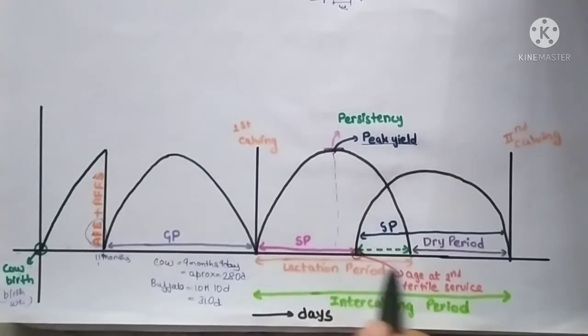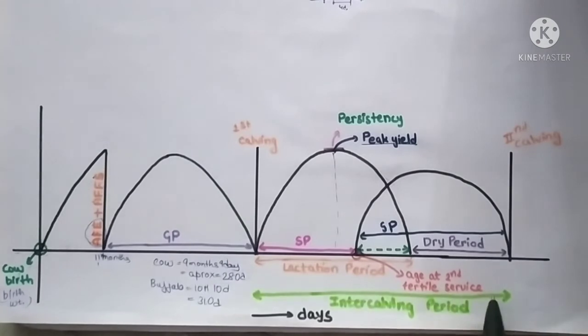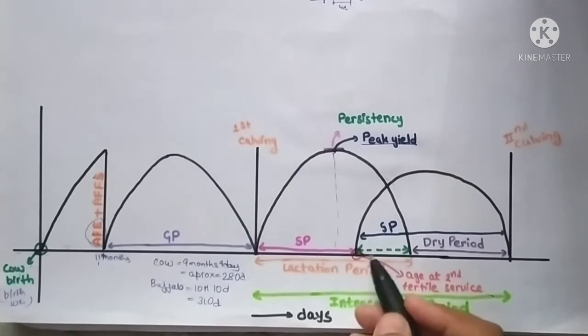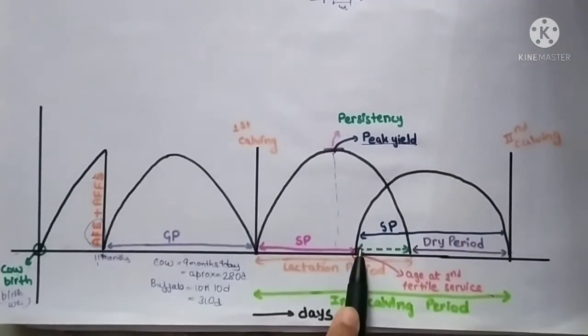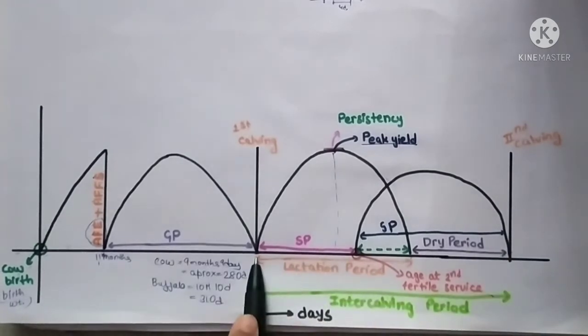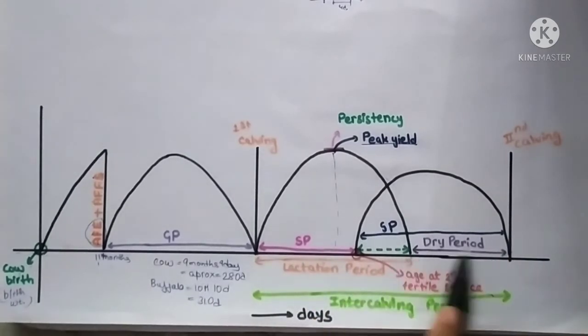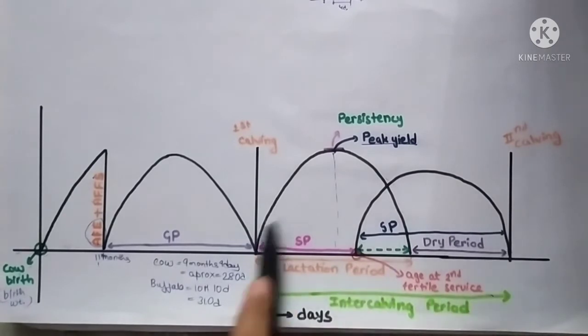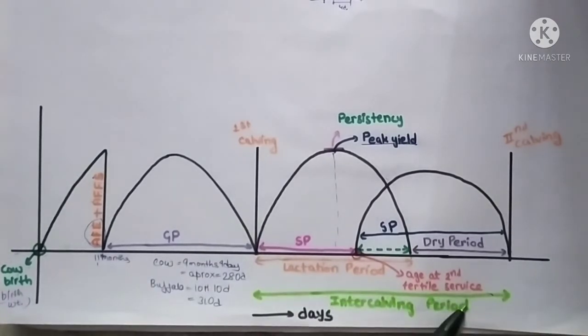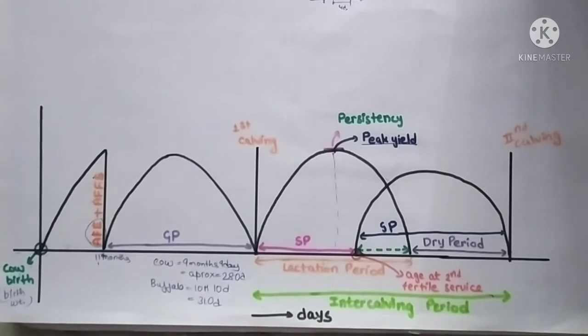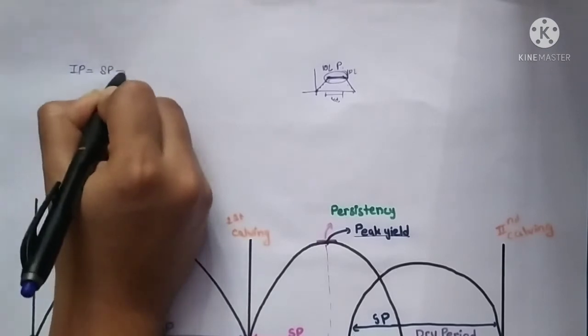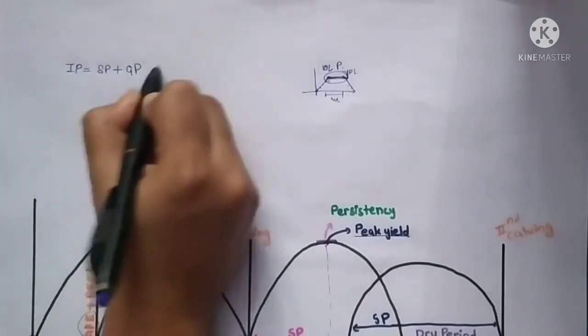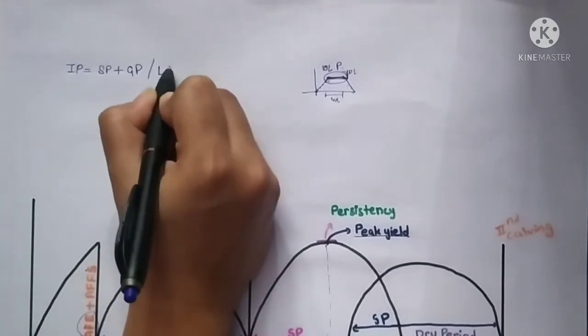Then the gestation period starts. This is the service period, and this is the gestation period. The lactation period plus dry period—this whole is known as intercalving period. As I told in the previous video, intercalving period is service period plus gestation period, or lactation period plus dry period.